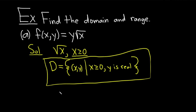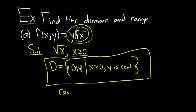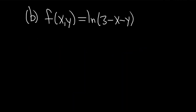As far as the range, that's basically all of the outputs. The square root of x can't produce every output, but y can — y can be any number. So therefore this whole expression, y times the square root of x, can be any number. So the range in this case is equal to all real numbers, from negative infinity to infinity. Part b: we have f of x,y equals the natural log of 3 minus x minus y.